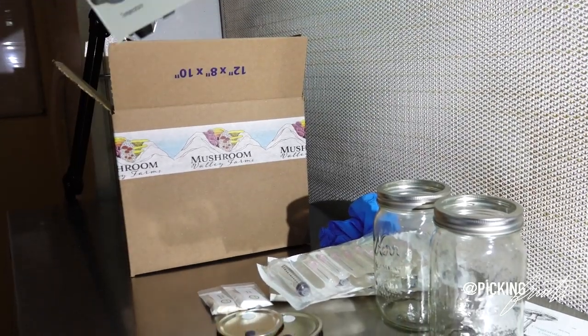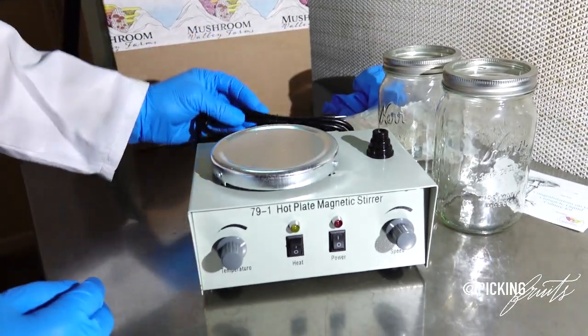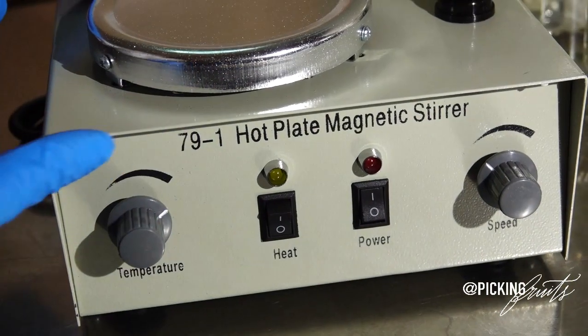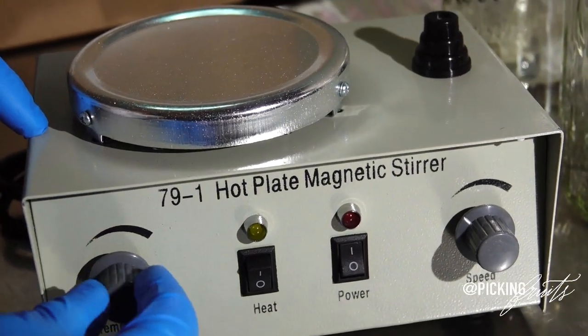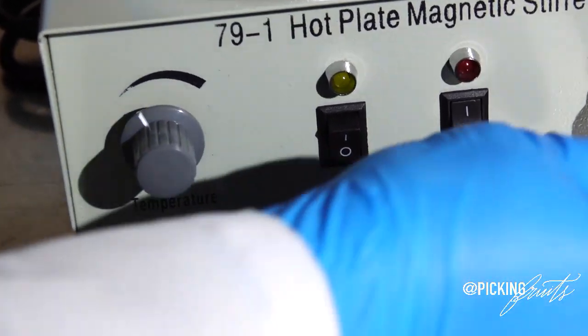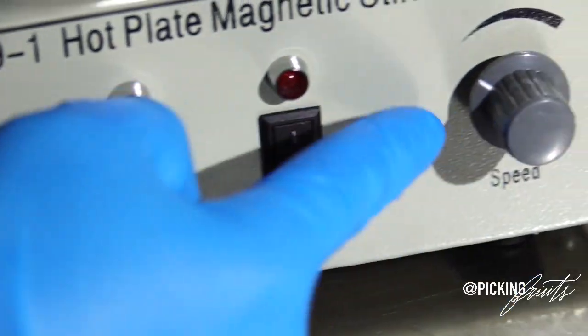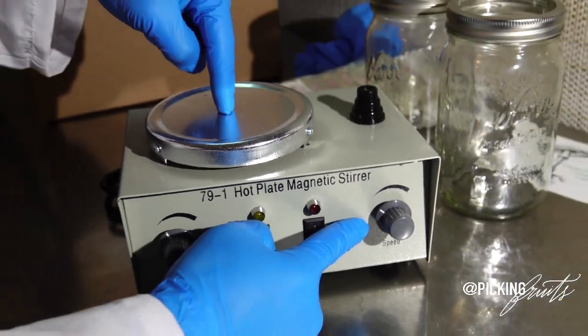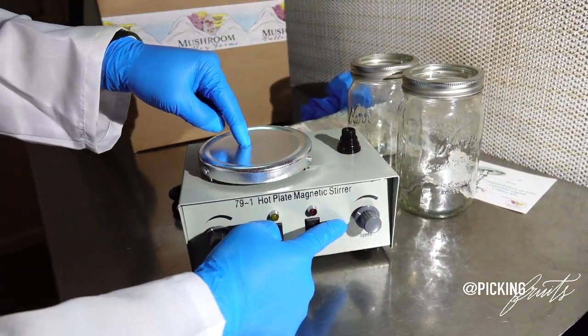And last but not least you will find your magnetic stir plate. This magnetic stir plate has nice thick steel gauged casing on it. It has a temperature control knob with an on and off switch. And it also has variable control for your RPM speed that will control how fast or how slow your magnetic stir bars spin inside of your mason jars.